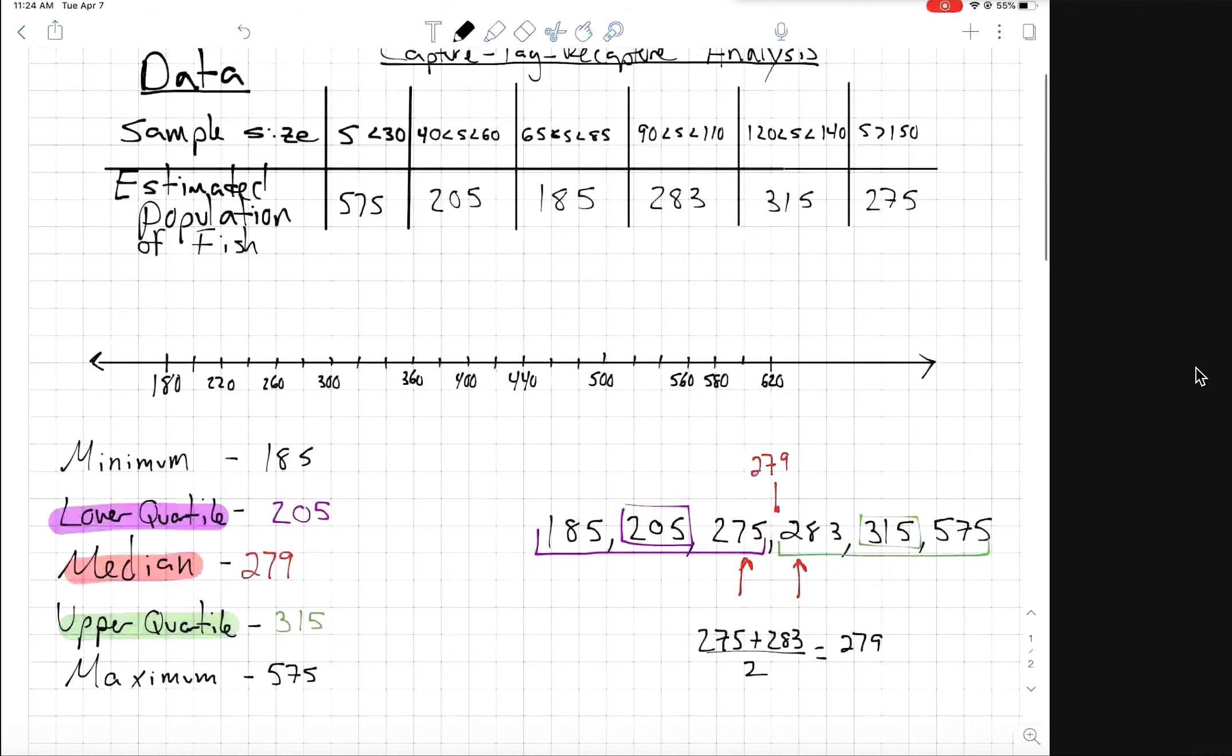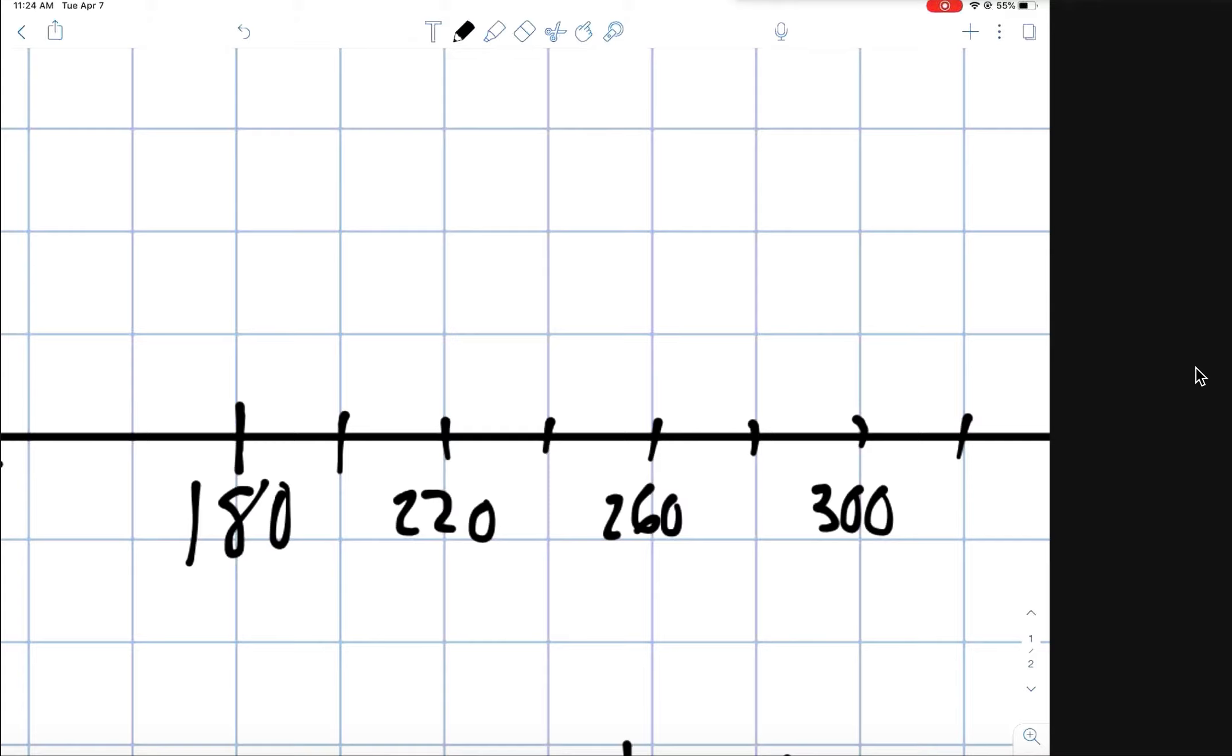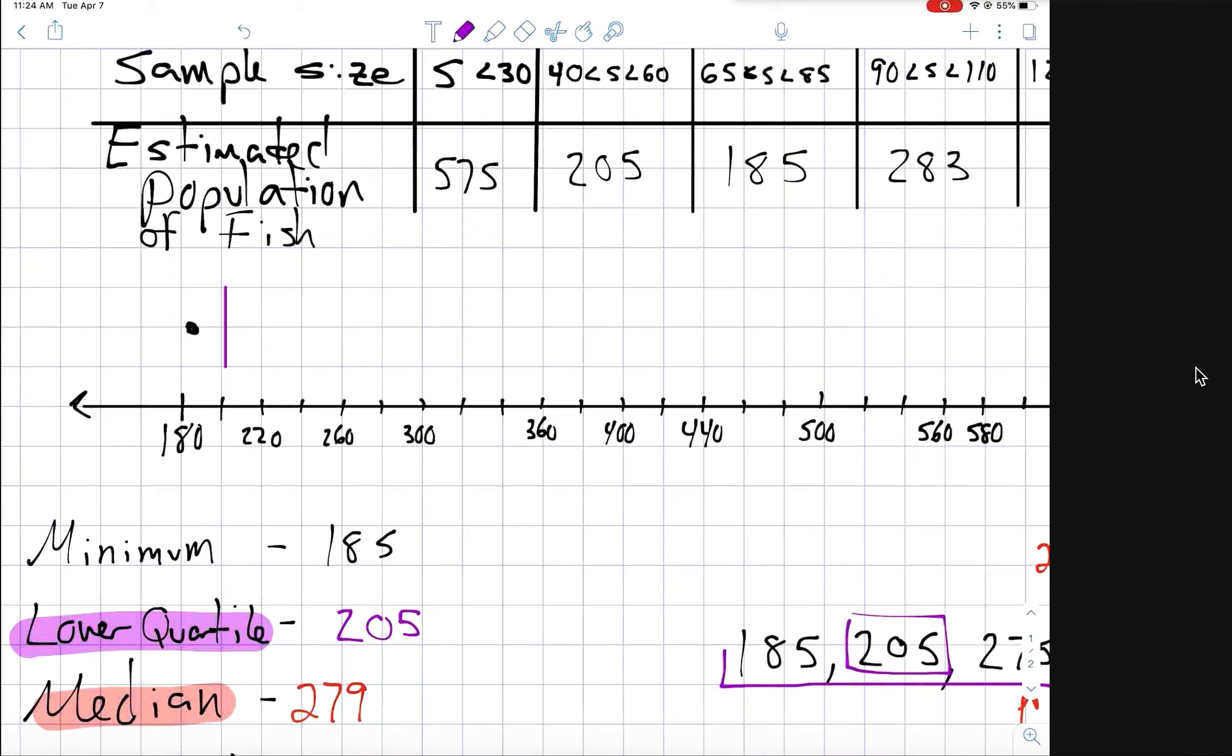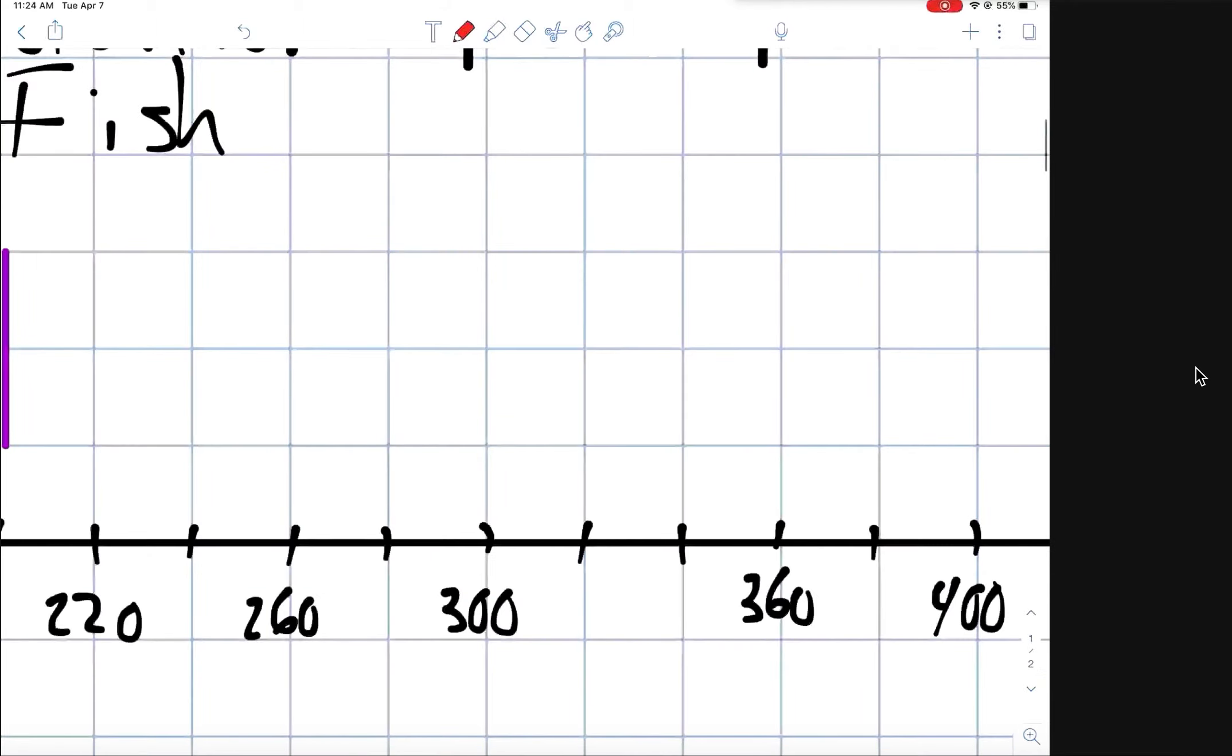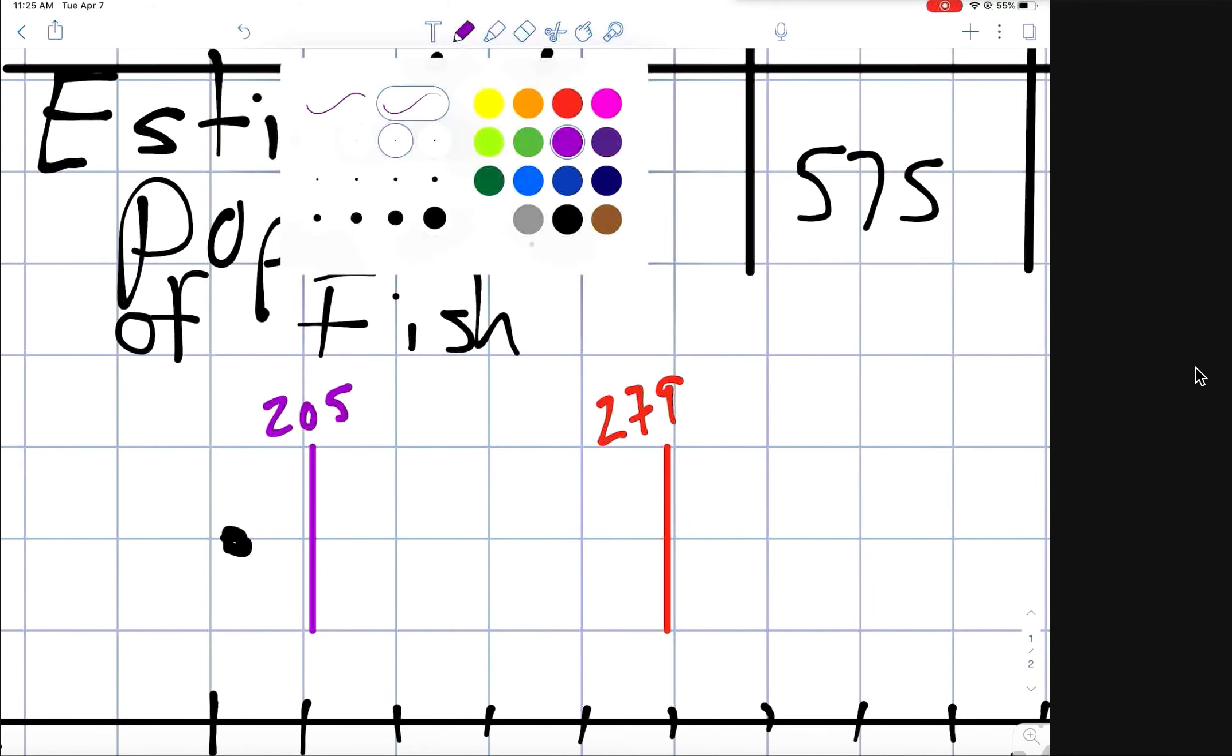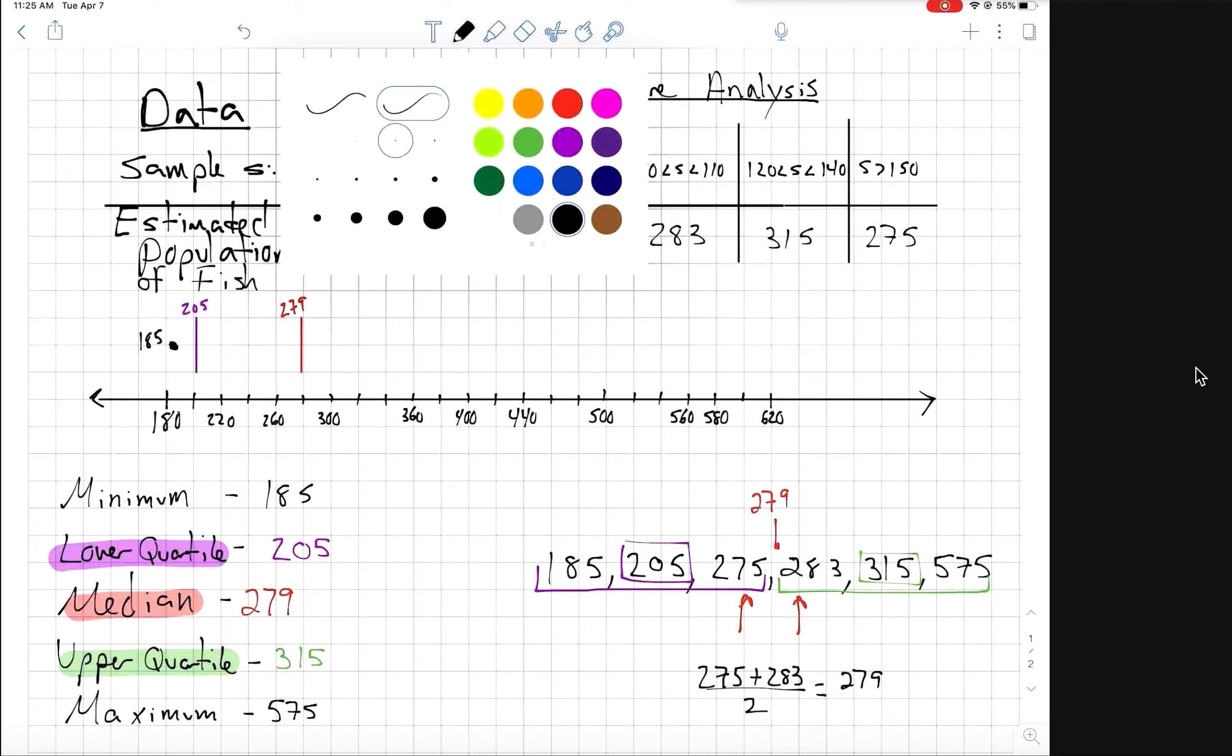Notice how I don't put a number under each tick mark because it would be too crowded, so I just put them under some of them as I'm going. And then we can start to plot our data. We'll put our minimum down, which is 185. Our lower quartile is 205. Our median is 279. It's always a good habit to write down your values so that you don't have to think about them if they don't line up perfectly with your number line. It makes it easier for analysis later.